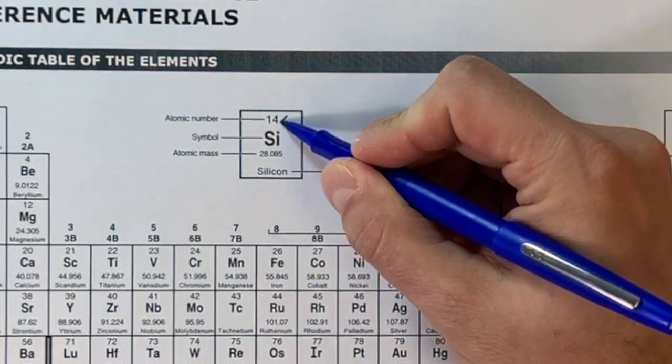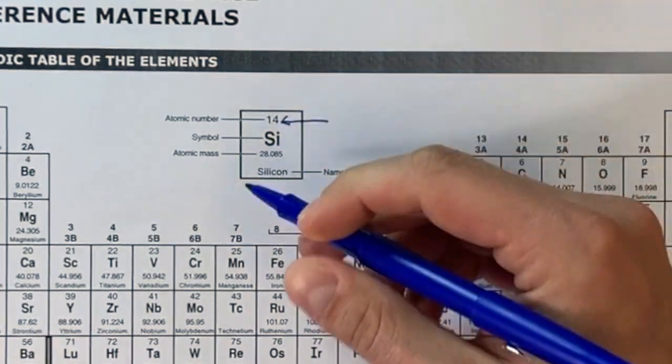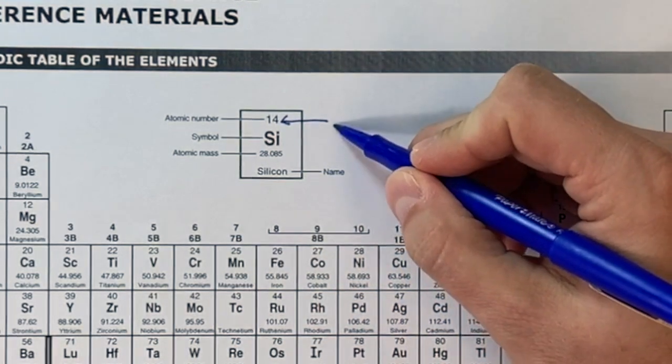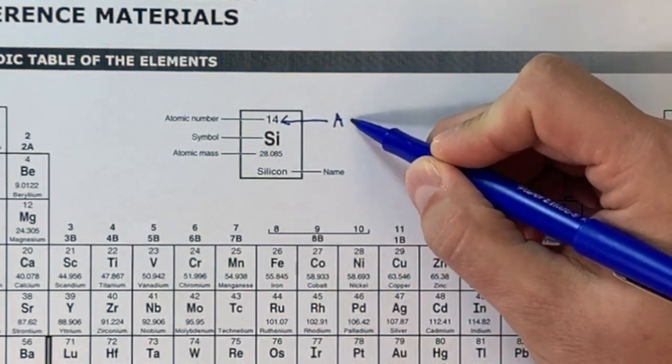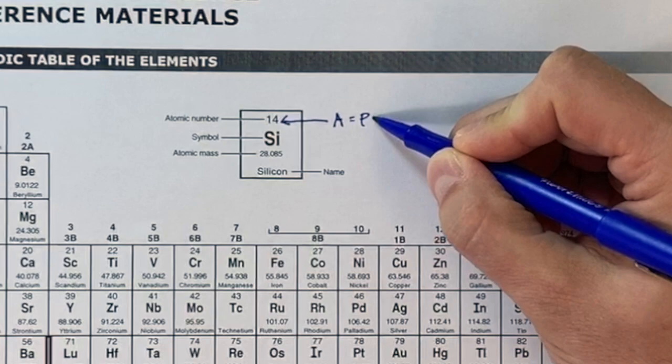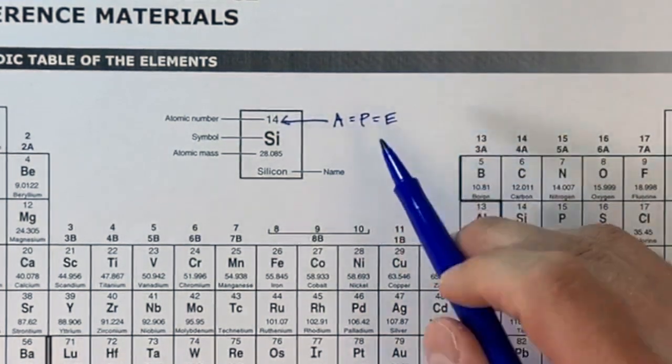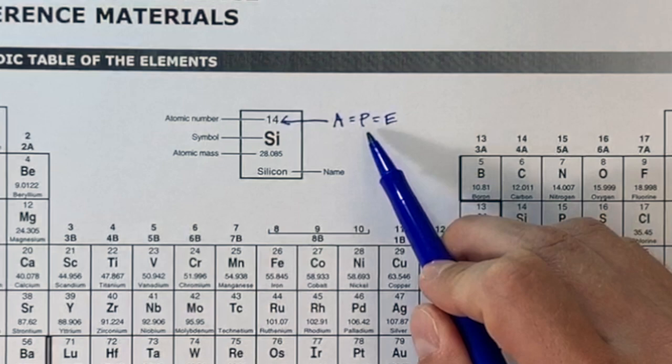The first thing we're going to annotate is this little element box right here. We're going to remember back to APE MAN. The atomic number is equal to the number of protons and the number of electrons, and it's what gives the element its identity.